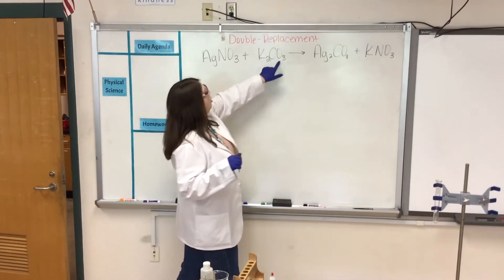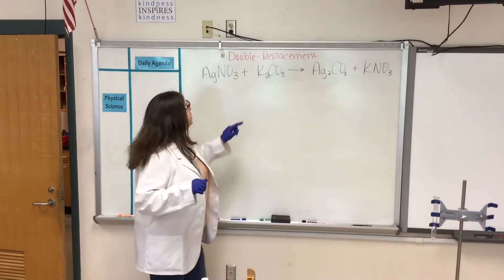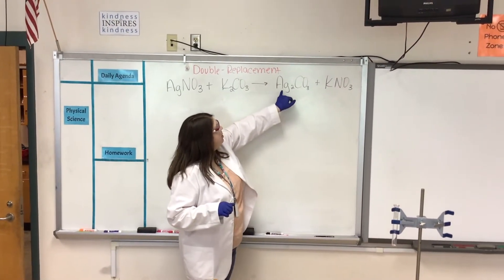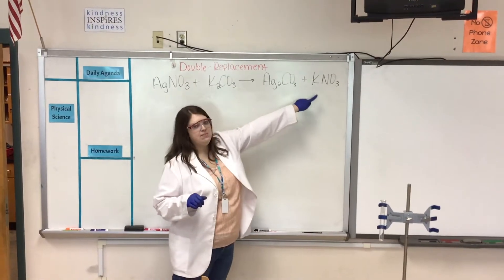Silver is going to bond with the carbonate in potassium carbonate. Potassium is going to bond with the nitrate in silver nitrate. That's going to form our products: silver carbonate and potassium nitrate.